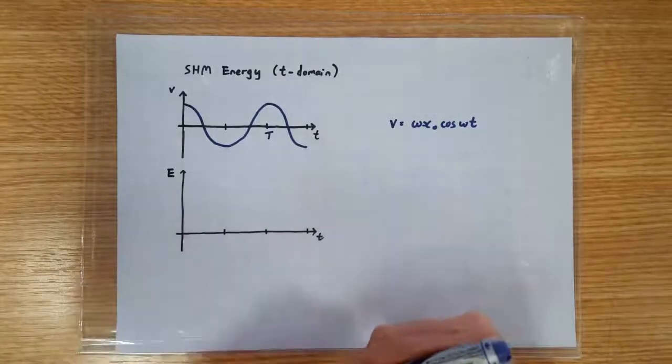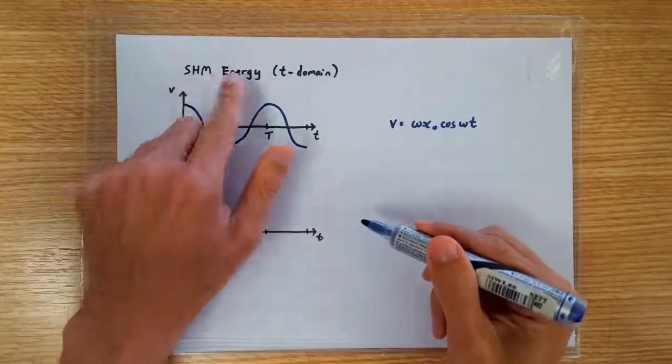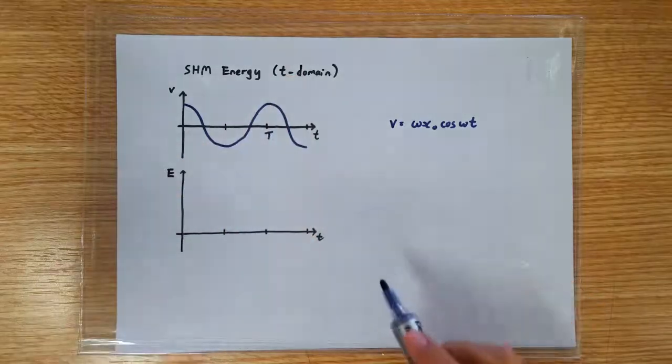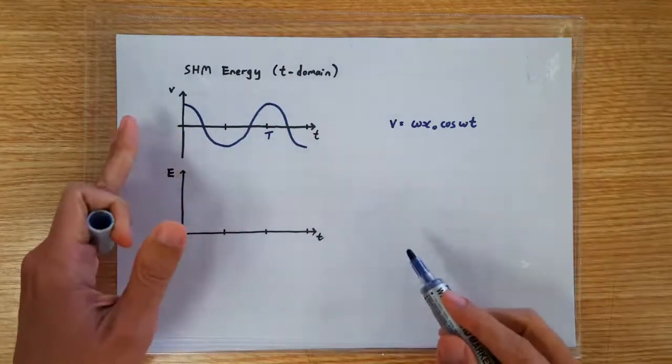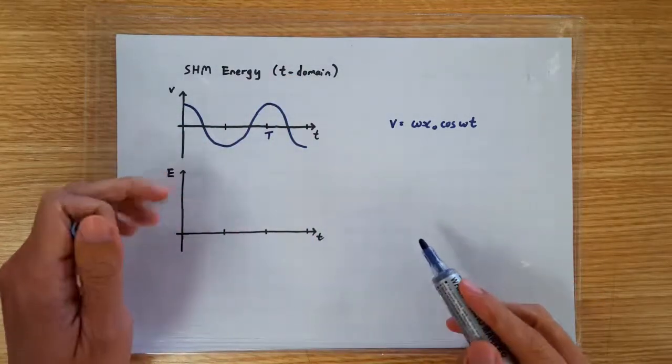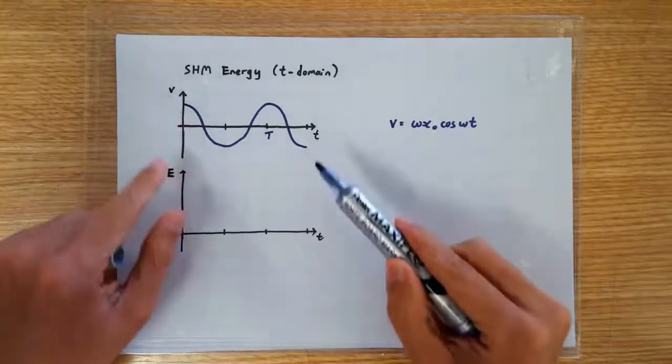Hi, thanks for coming. This video is about SHM energy graphs in the time domain. Personally, I always like to start with the kinetic energy graph because of the obvious link between the VT graph and the KE graph.